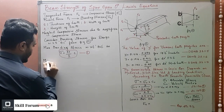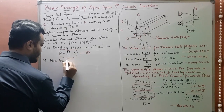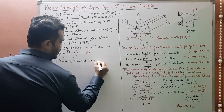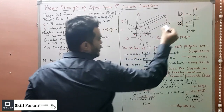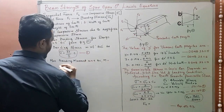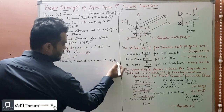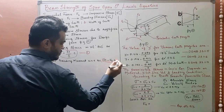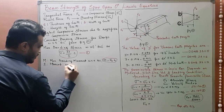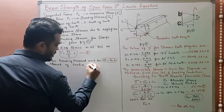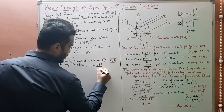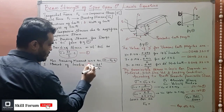In equation one, M is the maximum bending moment with respect to the base. That is M = Ft × h. I is the moment of inertia, which is I = bt³ / 12.